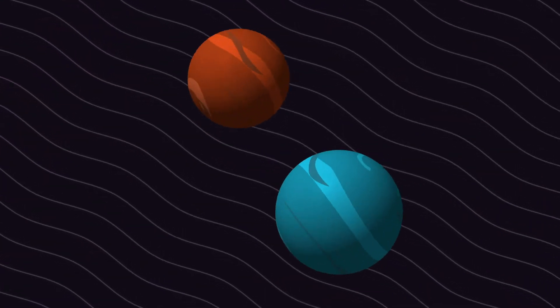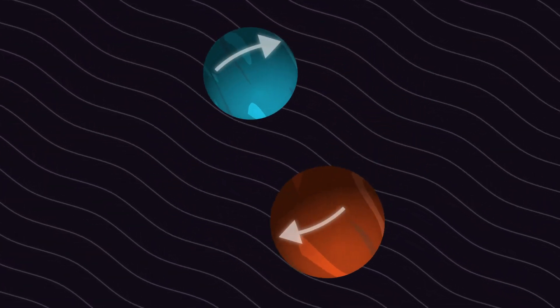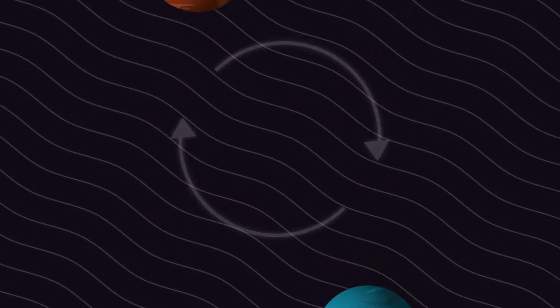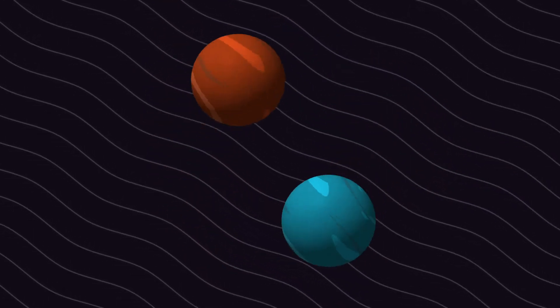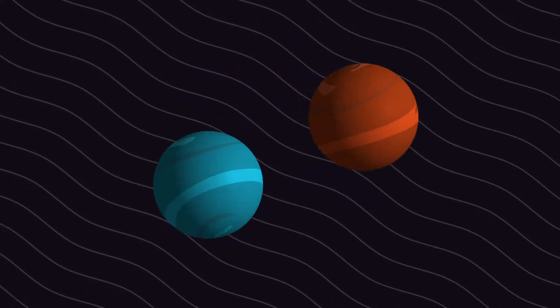When any two objects orbit each other, this gravitational pull is what keeps them from flying apart. The faster two objects are orbiting each other, the more mass we expect them to have.